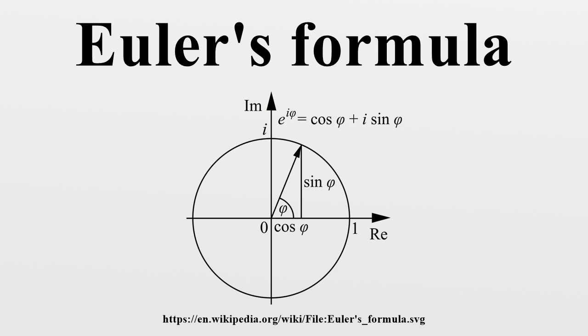The proof is measured counterclockwise and in radians. The original proof is based on the Taylor series expansions of the exponential function e^z, sin(x) and cos(x) for real numbers x. In fact, the same proof shows that Euler's formula is even valid for all complex numbers x.